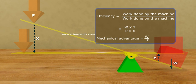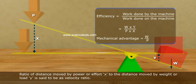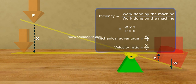Mechanical advantage is equal to W by P. Ratio of distance moved by power or effort X to the distance moved by weight or load Y is said to be as velocity ratio. Velocity ratio is equal to X by Y.